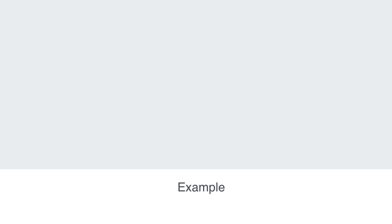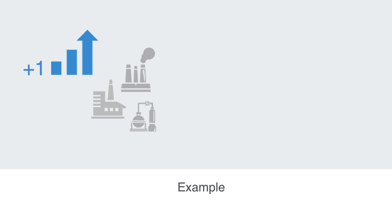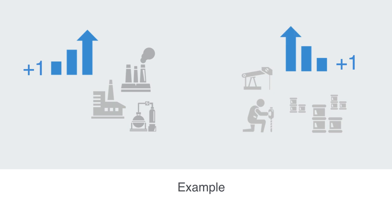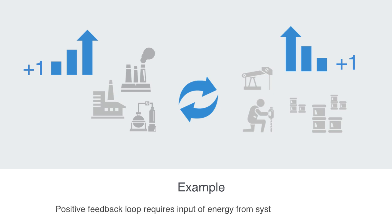These positive feedback loops are of course unsustainable, requiring the input of energy from their environment. The exponential growth in human industrial activity over the past few centuries could be cited here: the more developed our industrial technologies are, the better we are able to process and access petroleum, which again feeds back to result in more energy and more industrial development. But this is all the product of some input of energy from the system's environment that will eventually reach some limit.